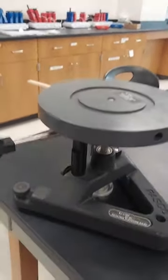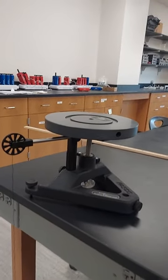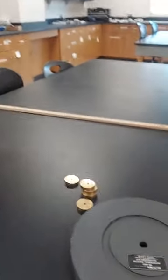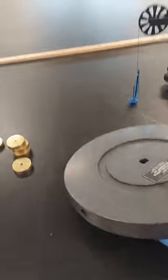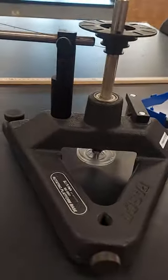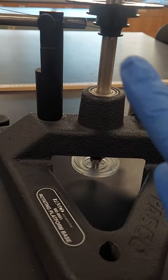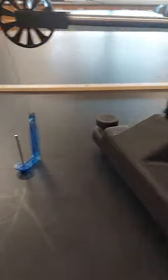So we are going to move over to our Rotation Lab. This looks like a horizontal Atwoods machine. So here is your solid disk. The string is wrapped around the very lowest level. It is attached to a pulley with a mass hanger.